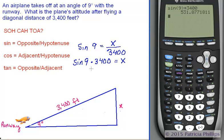And we have 531.8. So the plane's altitude after flying 3,400 feet is roughly 532, since we're going to round it up, feet. And there's your answer.